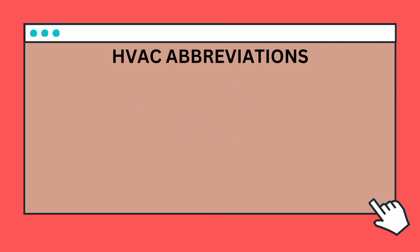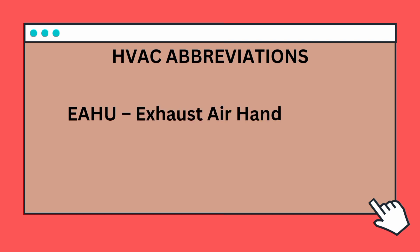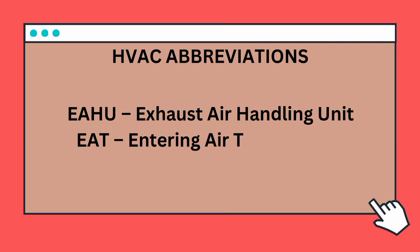EA — Exhaust Air. EAHQ — Exhaust Air Handling Unit. EAT — Entering Air Temperature.